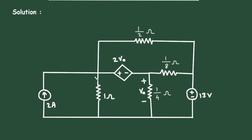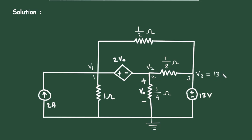Let's say this is node 1 with voltage V1, this is node 2 with voltage V2, and this is node 3 with voltage V3. Let's say this is a reference node or ground node. Here we can see V3 is connected to 13V and this 13V is connected to ground, so we can write V3 is equal to 13V directly.